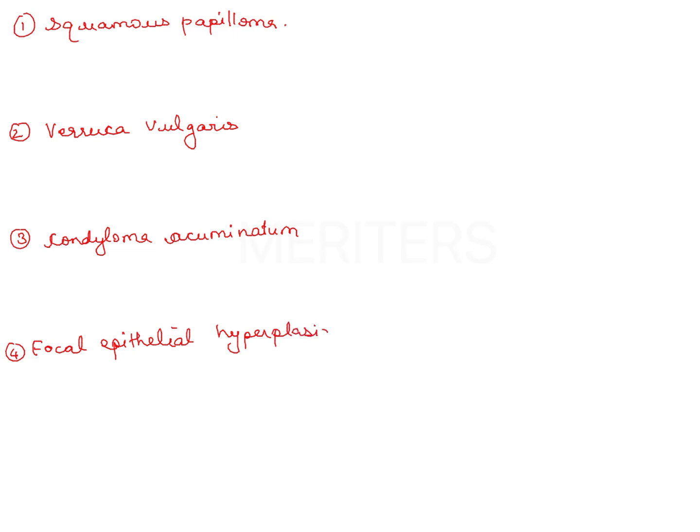Squamous papillomas are pedunculated or sessile proliferations of the epithelium with a cauliflower-shaped appearance clinically. They are smaller in size — nearly 0.5 centimeter — and occur as a single lesion. It is a benign epithelial tumor seen at an average age of 40.